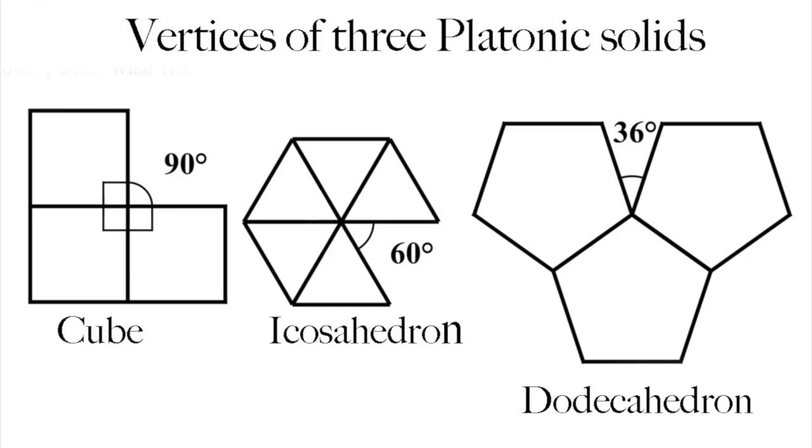The internal angles of a regular pentagon are 108 degrees. So again, you can make only one Platonic solid using pentagons, the dodecahedron. And there you have it, the five Platonic solids.